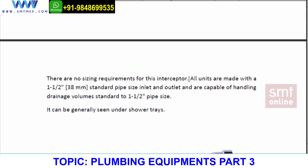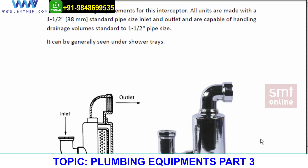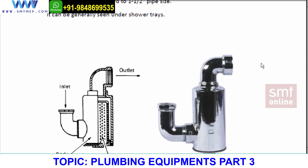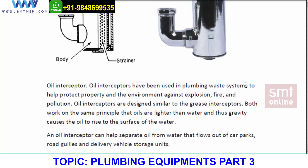There are no sizing requirements for the hair interceptor as there are for the grease interceptor. All units are made with a standard 1½ inch (40mm) pipe size, and both the inlet and outlet are capable of handling drainage volumes of a standard 1½ inch pipe. Hair interceptors are generally found under shower trays and are most commonly seen in Gulf country projects, especially in bathrooms used by ladies.